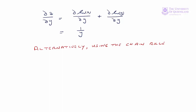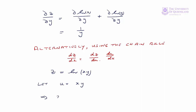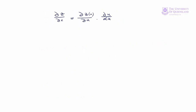Another approach is to use the chain rule. Recall del z del x is equal to del z del u times del u del x. We have our function z equals log of xy. We'll let xy equal u, which implies z equals log of u. In partial derivative terms, our chain rule is del z del x equals del z del u times del u del x. Since z equals log of u, it follows that del z del u equals 1 on u.